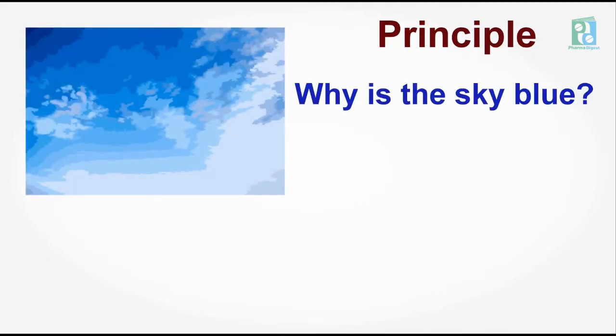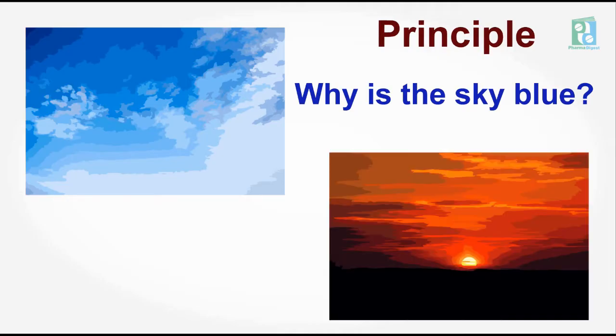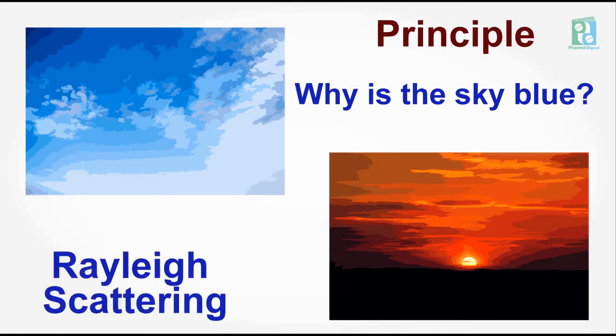Daytime sky looks blue on a clear day. The sky looks red at sunrise. Why? And the answer is Rayleigh scattering.